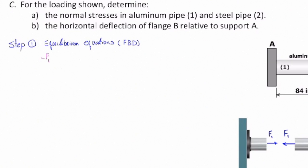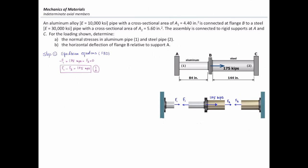And if you write an equilibrium equation for that, we will see negative F1 plus 175 kips plus F2 equals zero. So we have two unknowns and one equation, and we can't solve it. So this is indeterminate. And the degree of indeterminacy is one, because we need one extra equation to solve this problem.